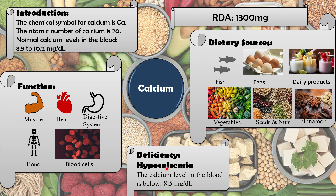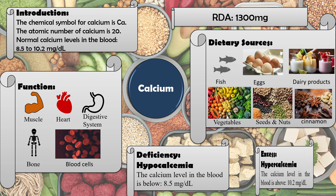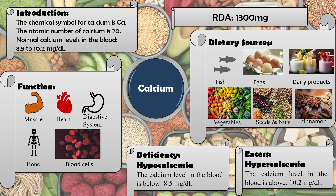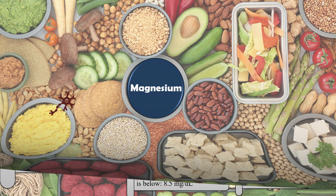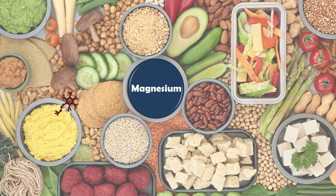Hypocalcemia refers to decreased calcium levels in the blood. If calcium levels exceed 10.2 mg/dL, it is known as hypercalcemia.